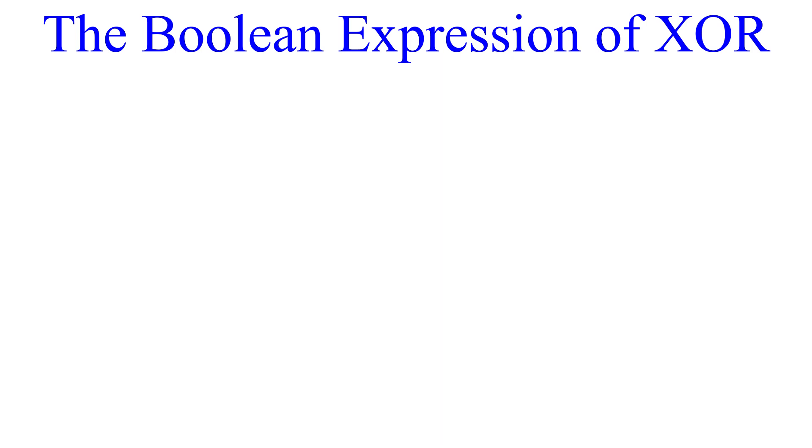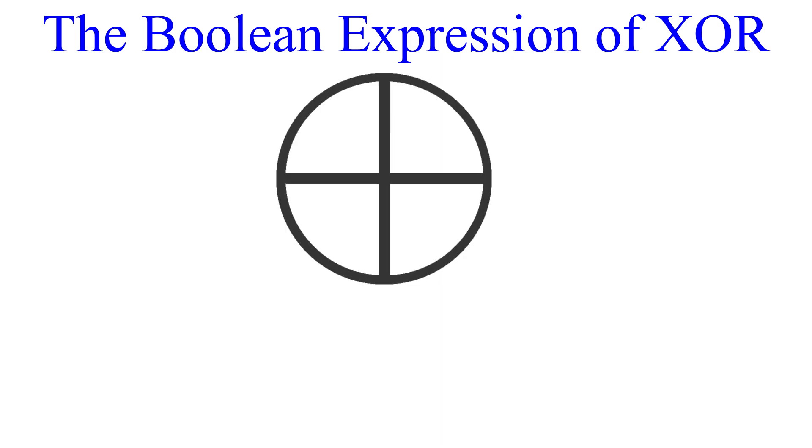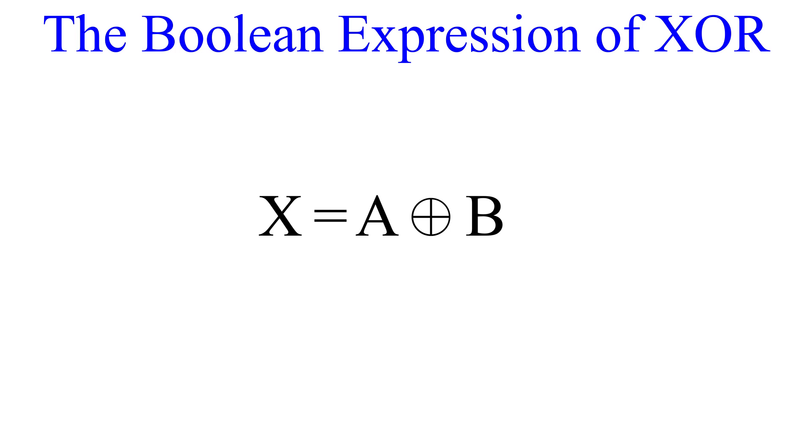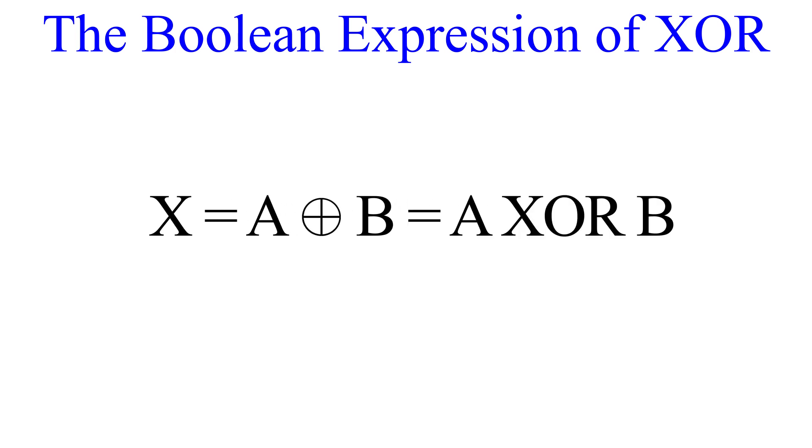Now it's time to look at the Boolean expression of XOR. This operation has its own unique symbol. For inputs A and B and output X, the output X equals A XOR B. As you see here, the symbol for XOR is the plus sign, the sign for OR, with a circle around it, indicating this OR is exclusive. If you're typing and can't find the symbol to write out the Boolean expression, you can always just type A XOR B.